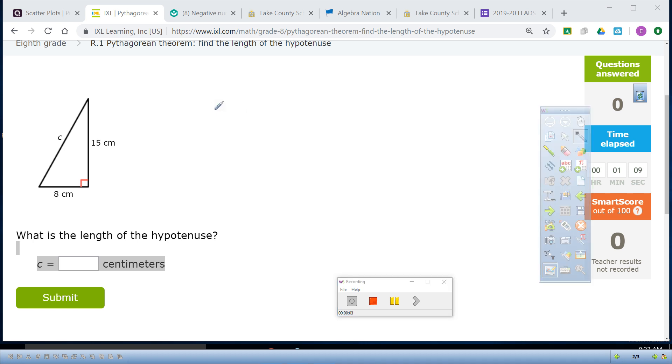All right, we have to do Pythagorean's Theorem, which is A squared plus B squared equals C squared.